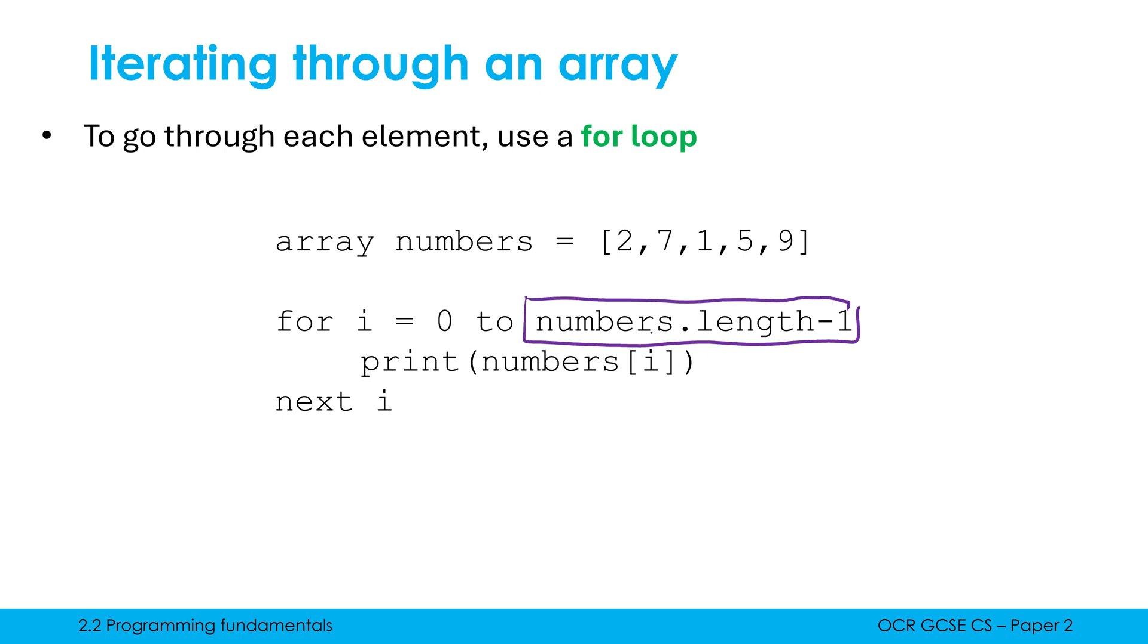What is the length of numbers currently? The length of numbers is five. I've got five elements in numbers. So we're doing five minus one, which is four. So our for loop is going to start at zero, then it's going to be one, then two, then three, then four. Once I hit five, the loop ends because I've said I'm stopping after four.